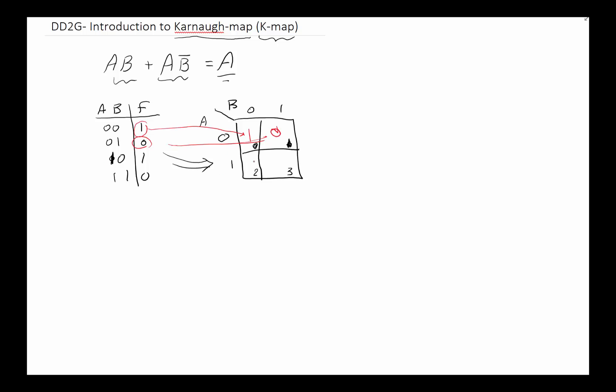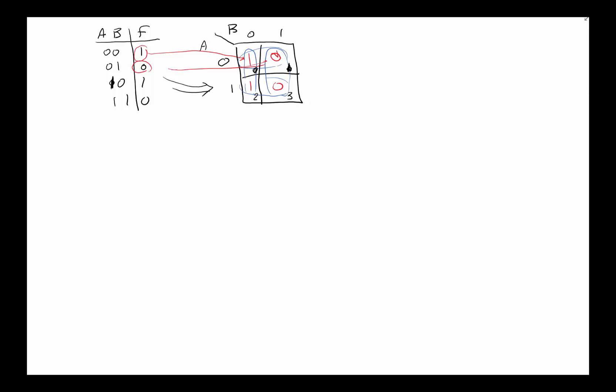Now notice that horizontally every two adjacent cells are neighbors of each other — these two are next to each other, and up and down they are also neighbors of each other. This visual neighbor relationship is exactly what we'll take advantage of during minimization. Since the two-variable case was relatively simple, let's look at a more complex example with three variables.